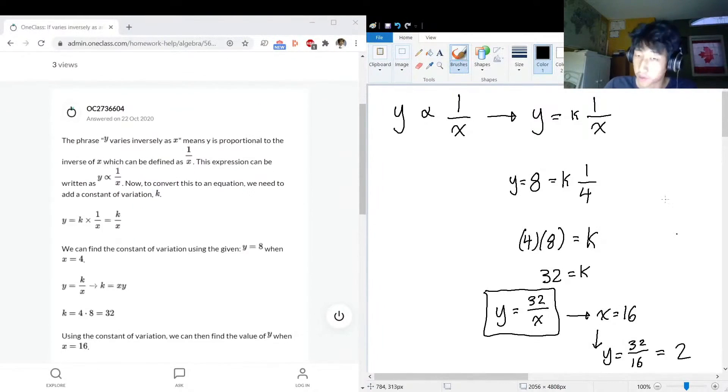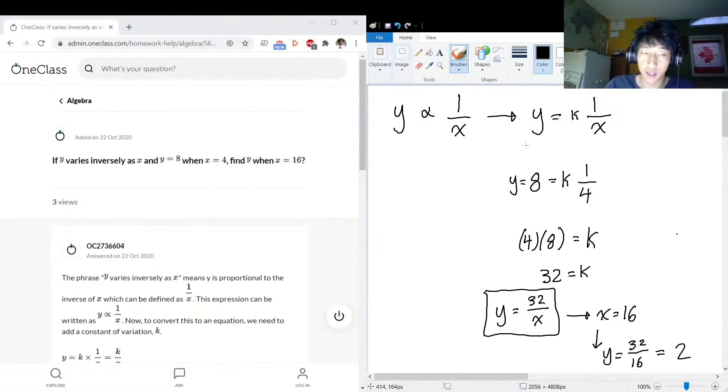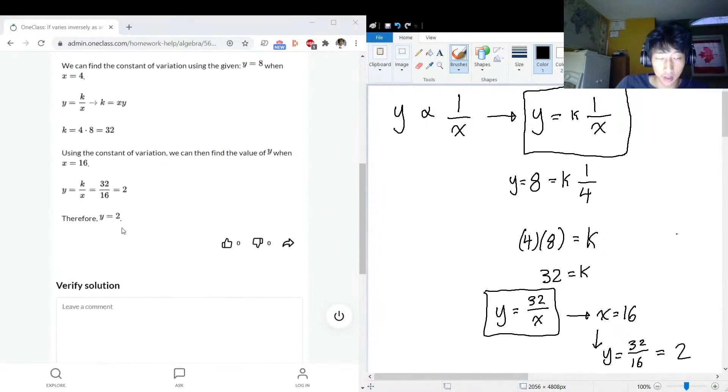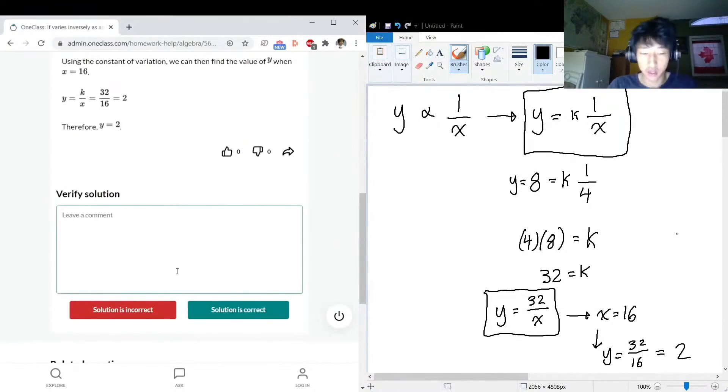That's how you know it. I think the key word here is setting up originally this equation y equals k over x when you know that they have an inverse relationship with each other. The alpha here just means their relationship is inverse, but you can easily convert that alpha into an equals a constant times whatever. Awesome, sounds good. Y is 2, that's true. The above solution is good.